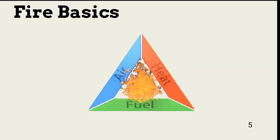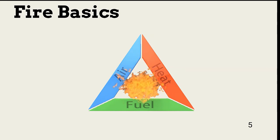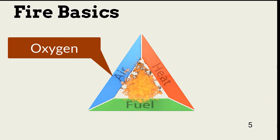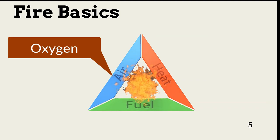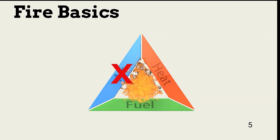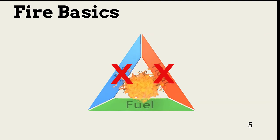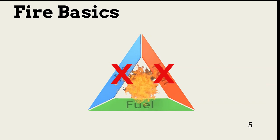At its most basic level, a fire requires three elements, as shown in this common triangle model: air or oxygen, heat, and fuel. Removing one of these prevents a fire from starting or allows suppressing an existing fire. Fire suppression systems are typically designed to remove either air, heat, or as we'll see in a later slide, the chemical reaction that perpetuates the fire.